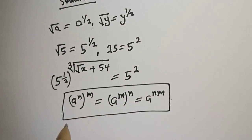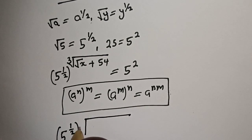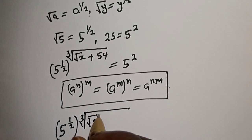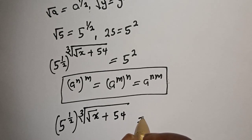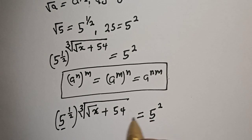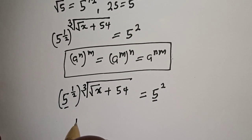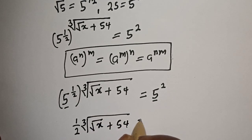Then the whole expression becomes 5 raised to power one over two times cube root of square root of s plus 54, is equal to 5 squared. Since they have the same base 5, we work with the exponents: one over two times cube root of square root of s plus 54 is equal to 2.